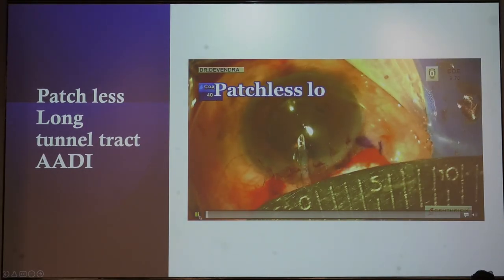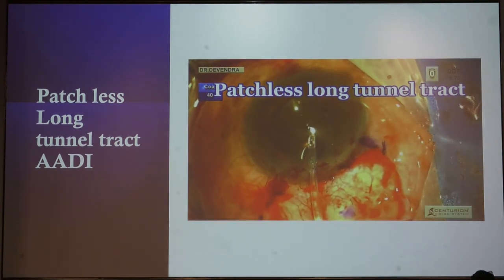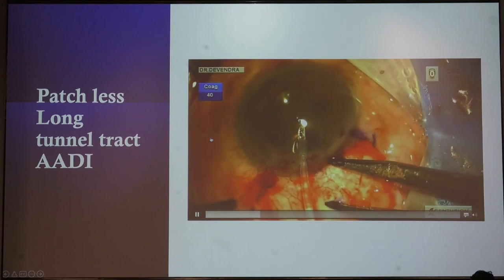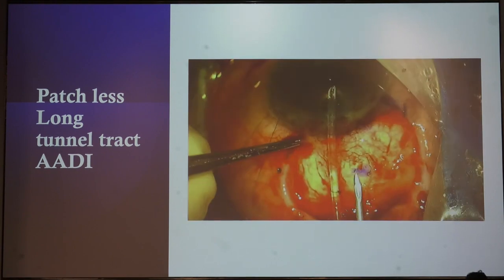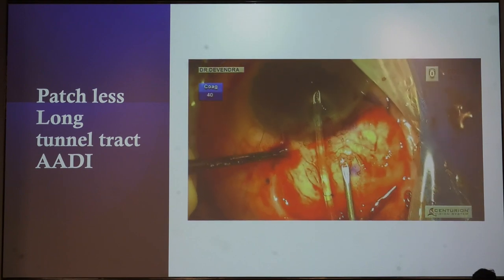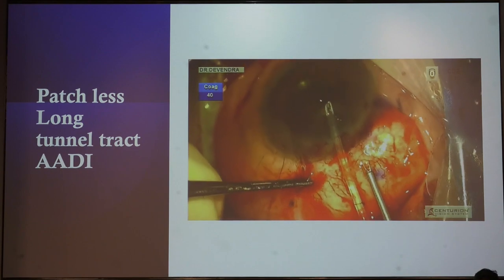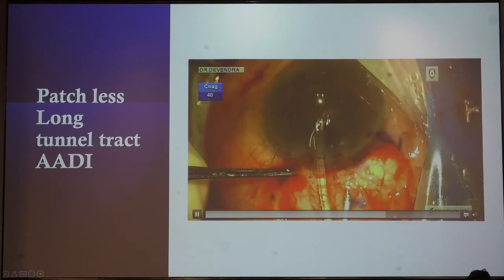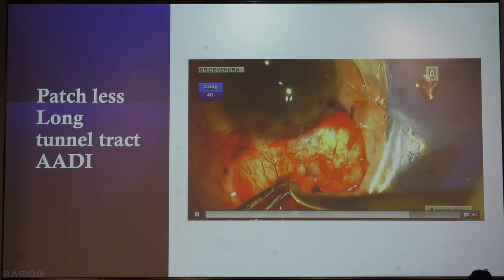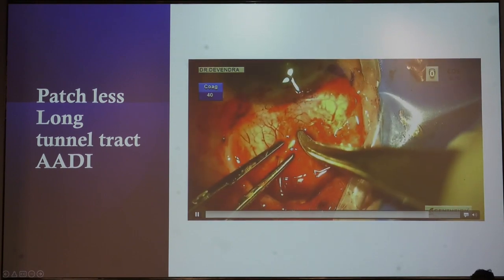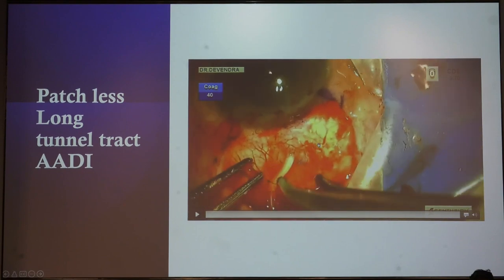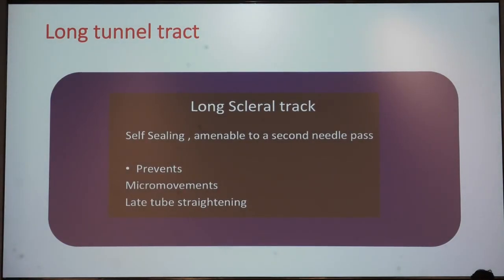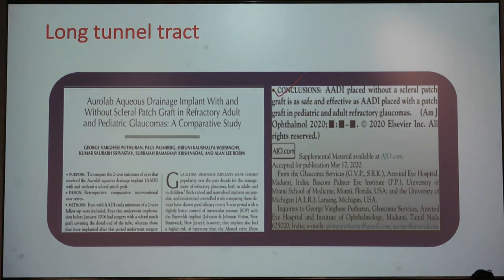Nowadays we have started a new technique — the patchless long tunnel technique. We no longer use any kind of patch graft. Mark the tunnel and mark the sclera 4 to 4.5 mm away from the limbus. Take the 23-gauge needle, involving half the thickness of the sclera. When going and reaching the limbus, literally dip down the needle and take it out. There is a little bit of a learning curve, but after this technique the surface is very smooth and we do not find any kind of tube exposure. This technique avoids micro-movement and late tube erosion. A study by George et al. showed good outcomes in both pediatric and adult glaucomas.